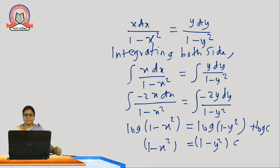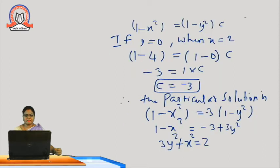Combining using logarithmic property and cancelling log both sides, we get 1 minus x² equal to c(1 minus y²). This is the general solution. For the particular solution, substituting x equal to 2 and y equal to 0, we get c equal to minus 3. Substituting back, the particular solution is 3y² plus x² equal to 2.